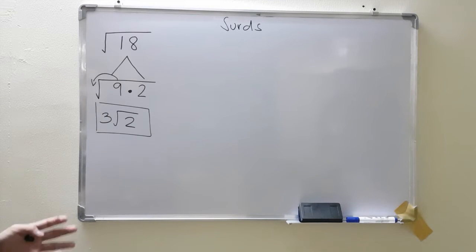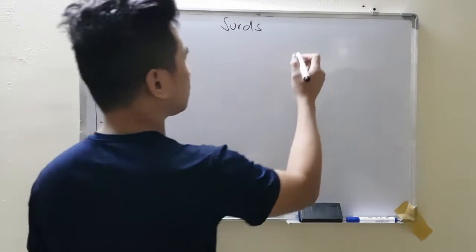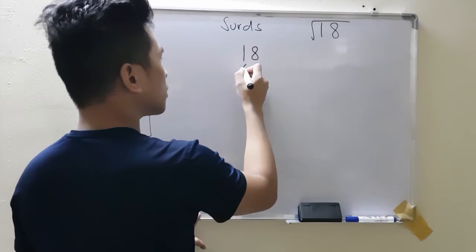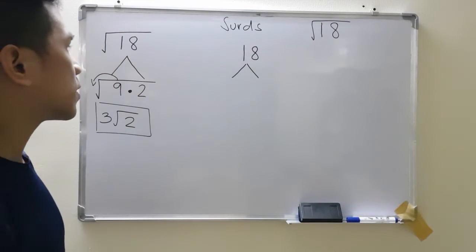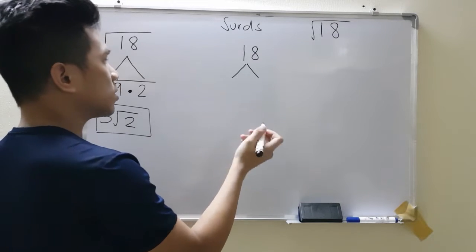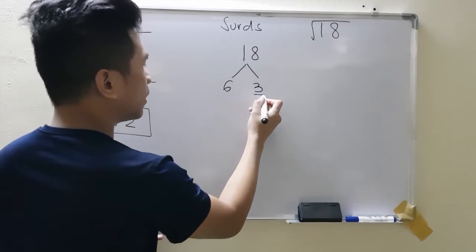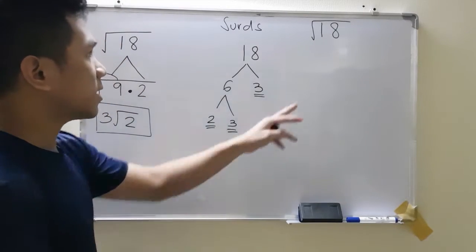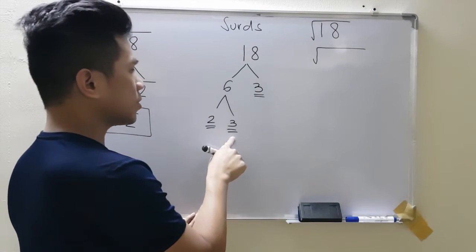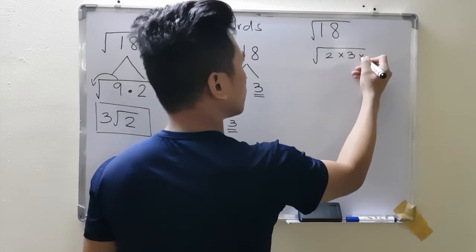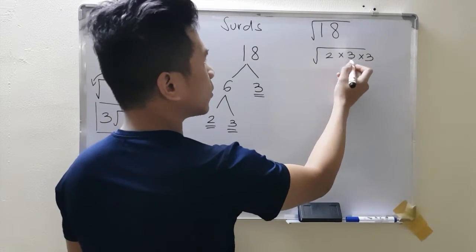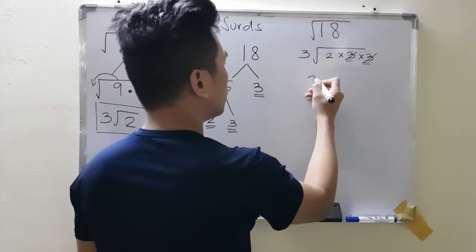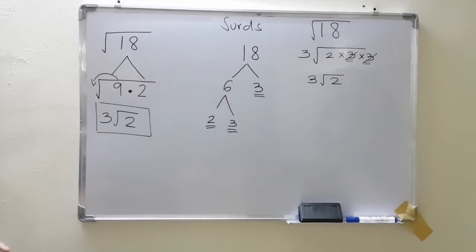If you're having trouble with multiplication tables, there's another method. Again, we have square root of 18. You can do prime factorization — factorize until you get all prime number factors. Starting with 18: it could be 6 times 3. 3 is already prime, and 6 can be written as 2 times 3. So 18 = 2 × 3 × 3. Every time you see two repeated numbers, like 3 and 3, cross them out and bring one outside. That gives the same answer.